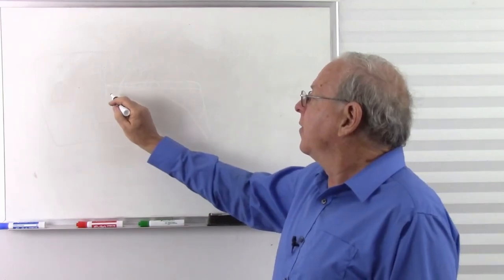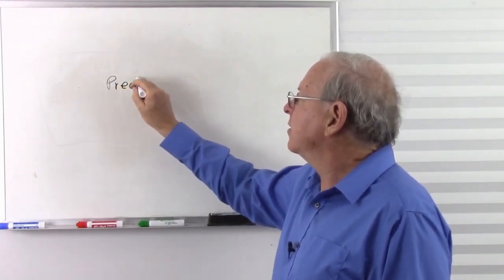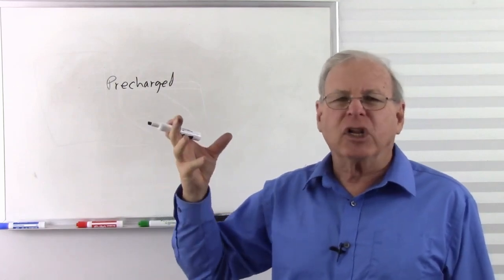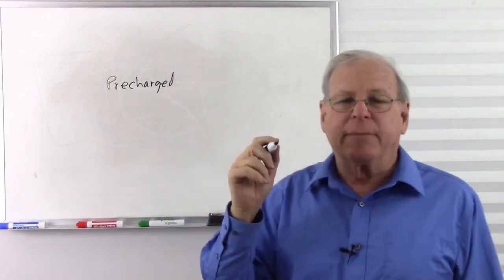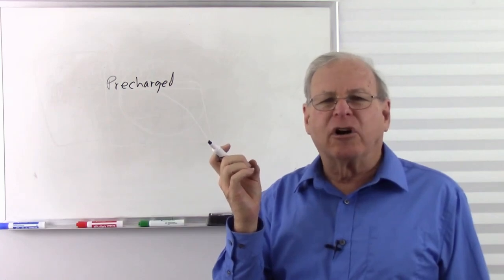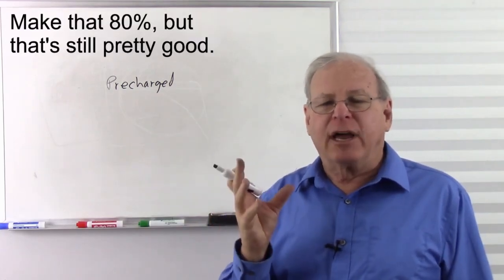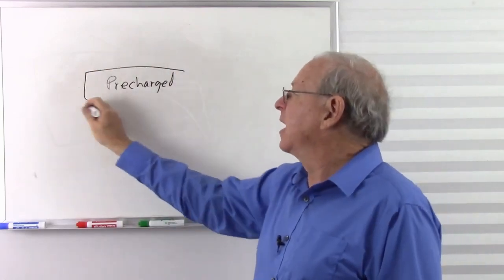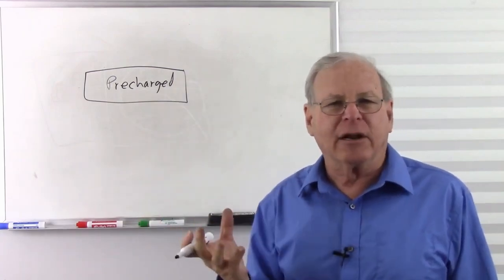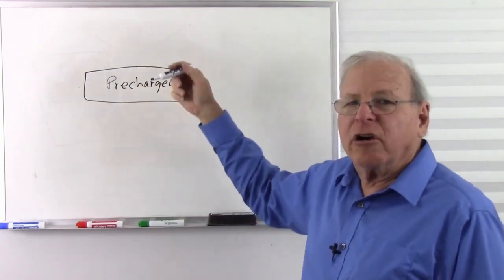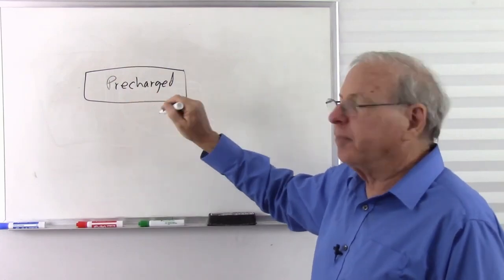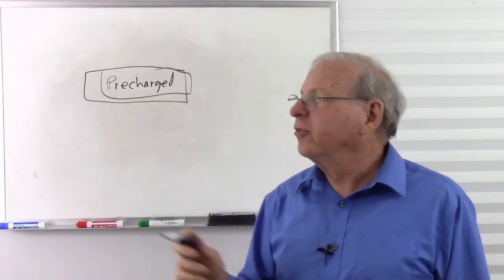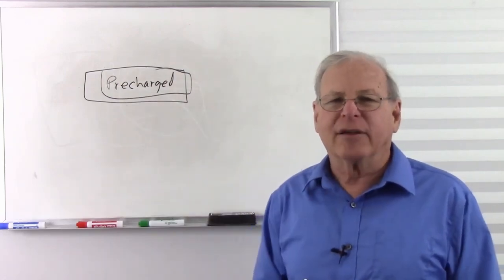Two different types of nickel metal hydrides are worth mentioning: the regular ones and ones called pre-charged. A nickel metal hydride battery, if you charge it and leave it on the shelf after about 90 days, loses enough charge that it needs to be recharged. But there is one chemistry that will hold 95% of its charge for a year. The pre-charged type can just be taken out of the package and used. They have a longer charged shelf life — you can charge them and leave them unused for a much longer period. So if you want batteries that don't self-discharge quickly, buy the pre-charged type.